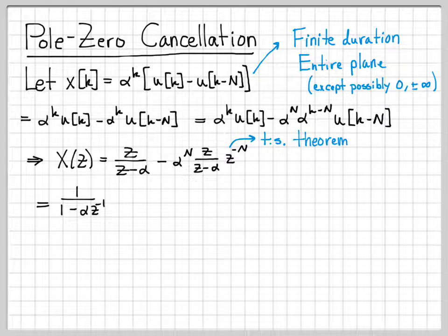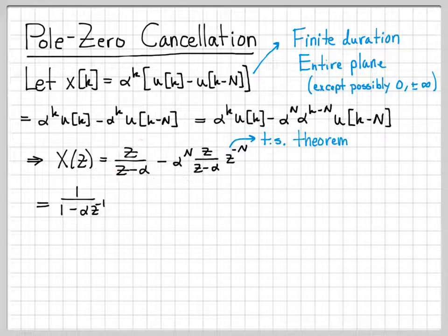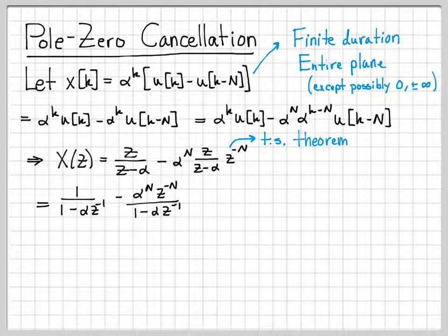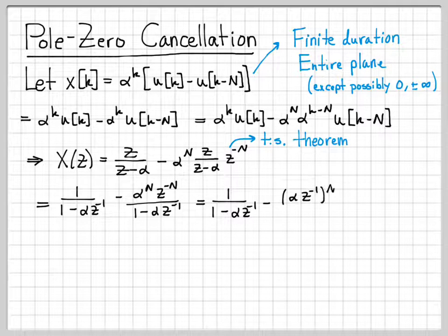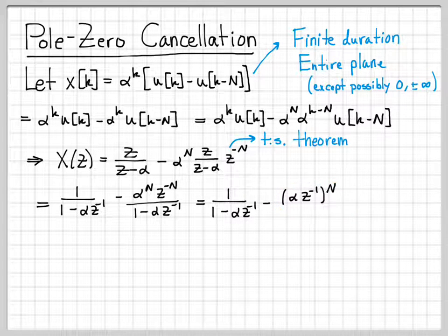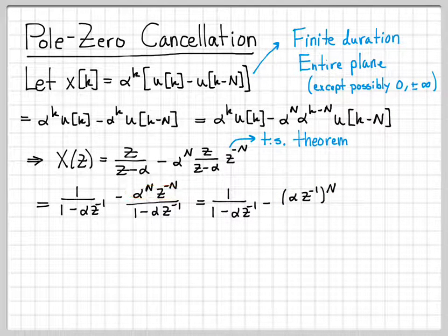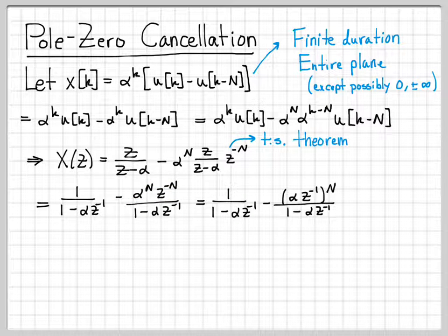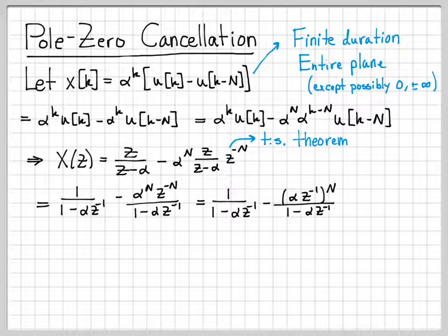I can actually rewrite this a little bit if I want to divide top and bottom by z. Another equivalent way of writing this difference is in this form right here. Another way you might write this down, different books use different conventions for how they like to have either positive z's or z's raised to negative powers. If I look at this on a term-by-term basis, this term right here I can factor into alpha times z inverse to the N. That's just factoring and raising both those quantities to the capital N, and the denominator stays the same.